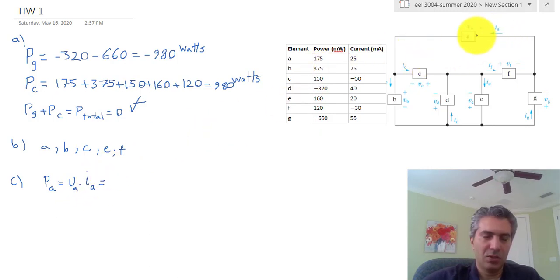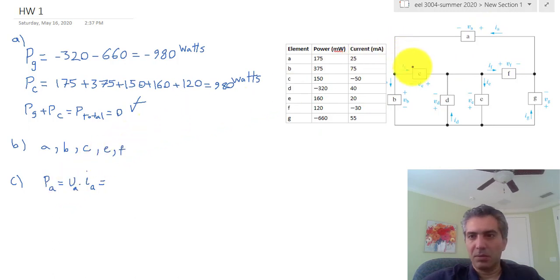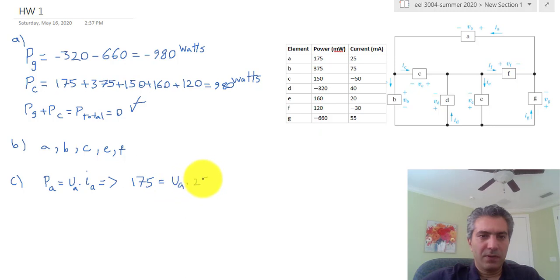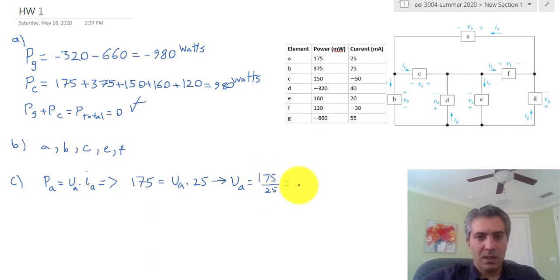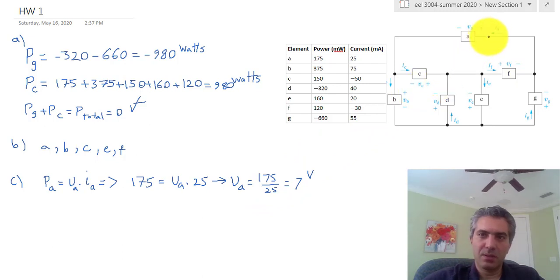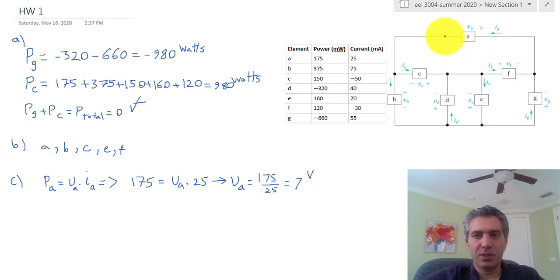A positive current going into the negative terminal would give a negative sign in the power equation. For element A, the power is 175 W and the current is 25 A, so V_A = 175 / 25 = 7 volts. This means the potential at the positive terminal is 7 volts higher than the potential at the negative terminal.